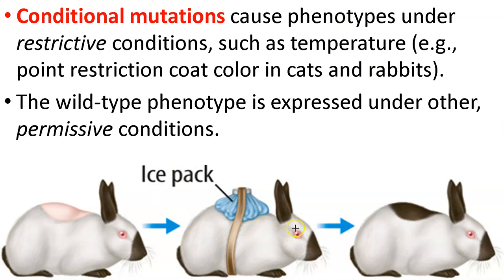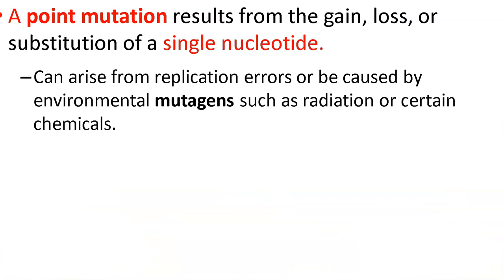A point mutation results from the gain, loss, or substitution of a single — underline that word single — nucleotide. At one point you have a substitution of a single nucleotide, which can arise from replication errors or be caused by environmental mutagens that cause mutations, such as radiation and certain chemicals.